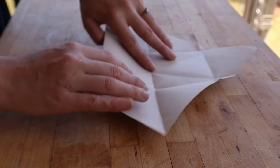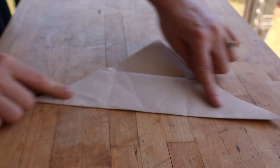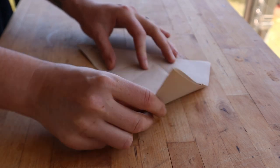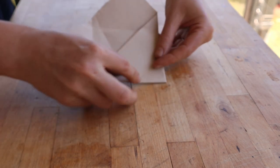Then you're going to fold it again. So it should create this type of shape and then you're going to take one side and fold it across like that.